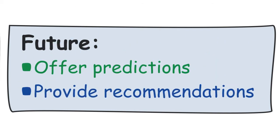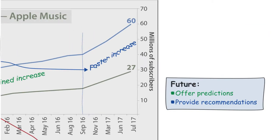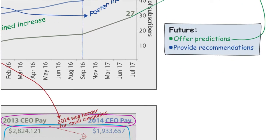Number two: provide recommendations. What should the company do with the data in your graph or table? Is now the time to increase production, or would it be smarter to invest in innovative new products for later? Again, only provide recommendations that you're confident the data supports. For example, here you could say that both companies expect subscriptions to continue to rise, as there has not been any significant decrease or stagnation in the last six years.